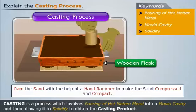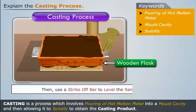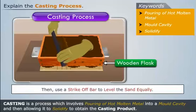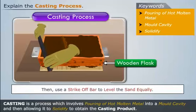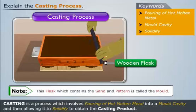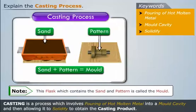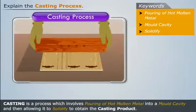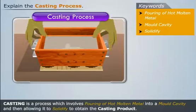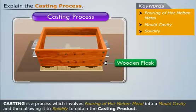Now take a hand rammer and ram the sand so that the sand inside the flask gets compressed and compact. Then use a strike-off bar to level the sand equally. Note that this flask which contains the sand and pattern is called the mold. Now turn this flask and place another wooden flask over the previous flask.